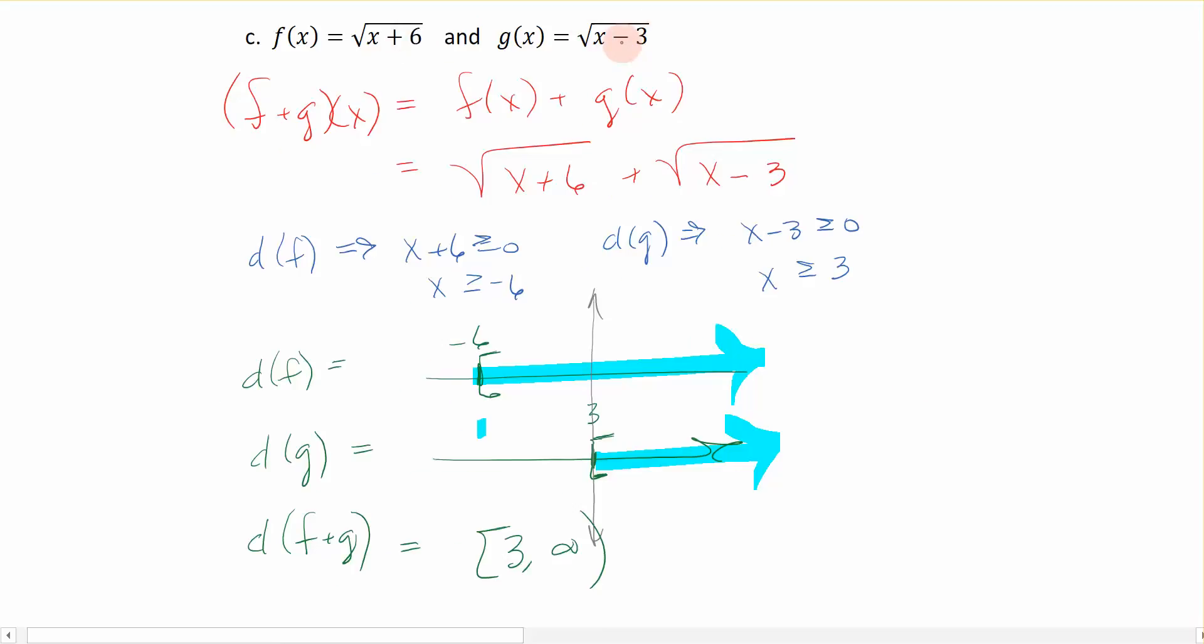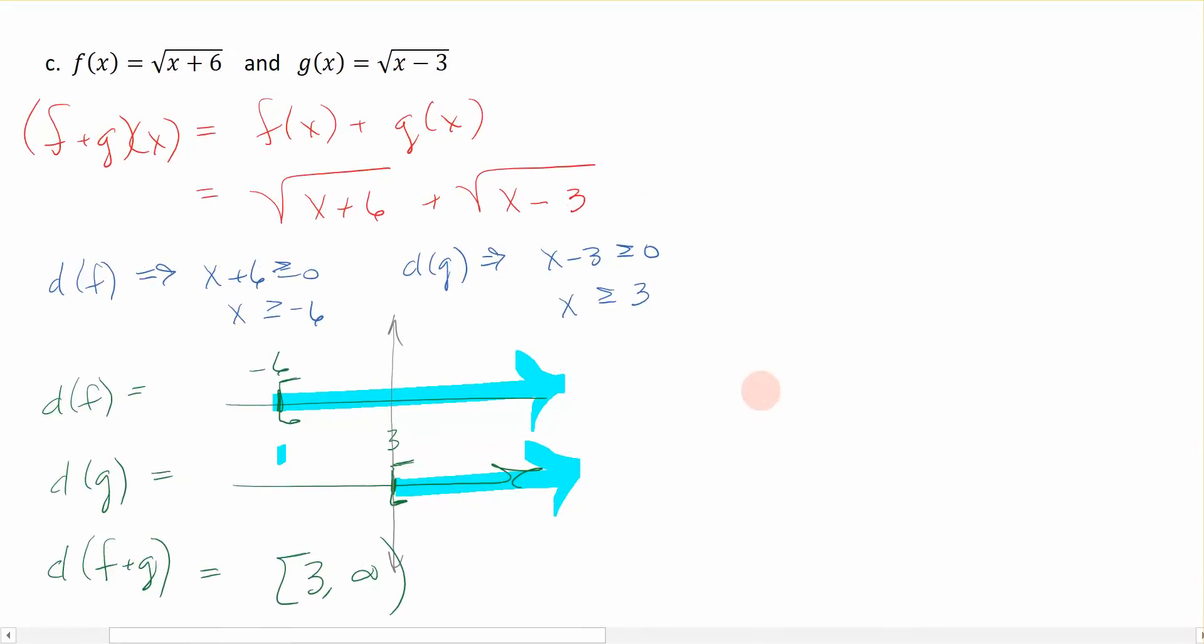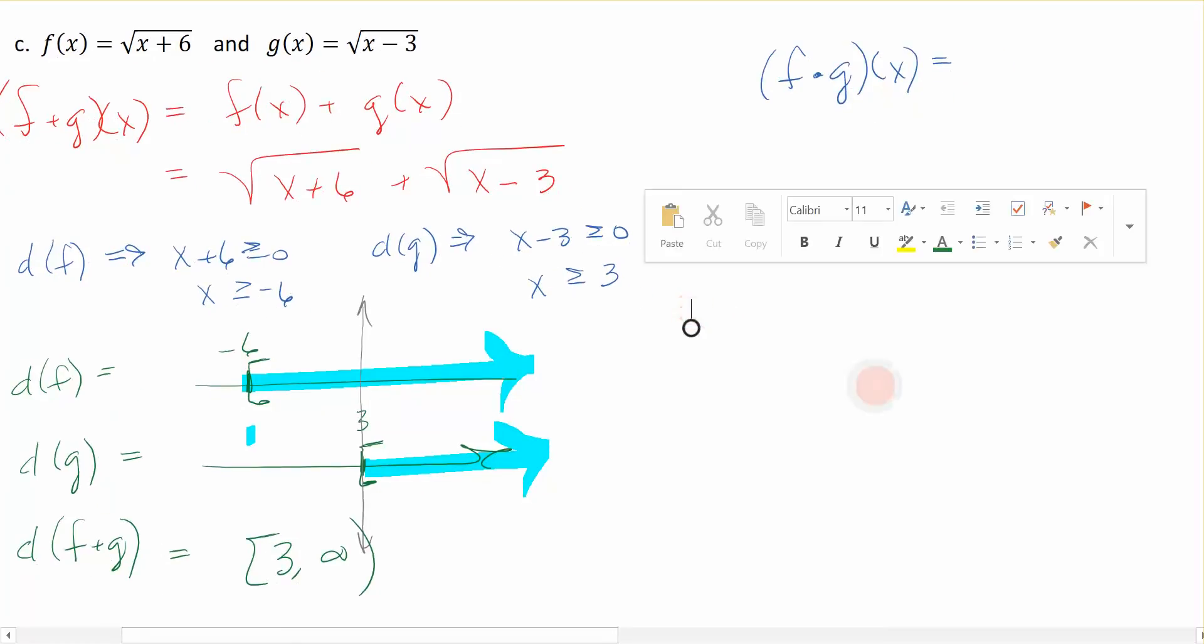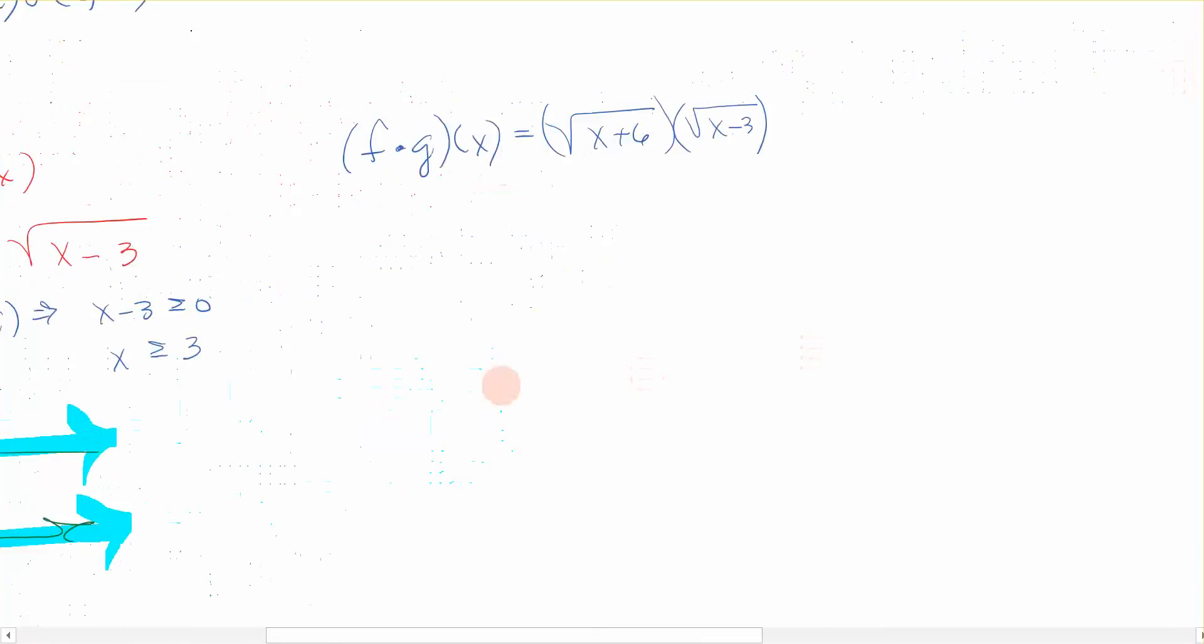I know in the other videos we found the quotient, which was division of our two functions, but I want to switch gears this time, and I actually want to find the product. So I want to say f times g of x. And these are my functions I'm using over here. So I have the square root of x plus 6 times the square root of x minus 3. Now let's see how we handle that.